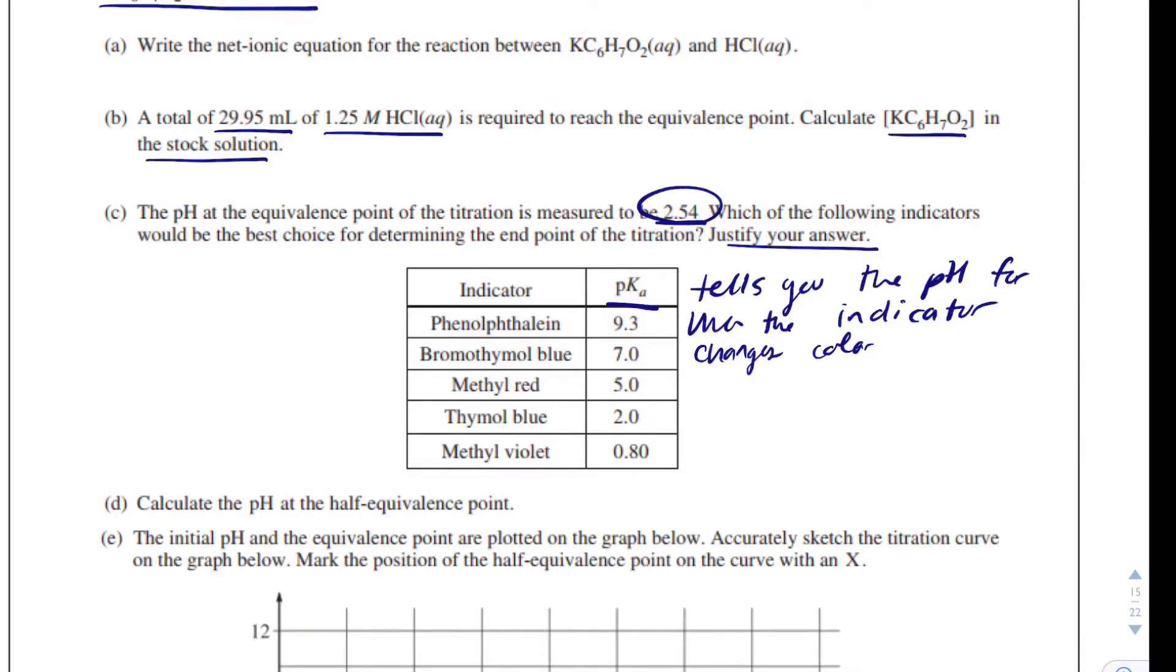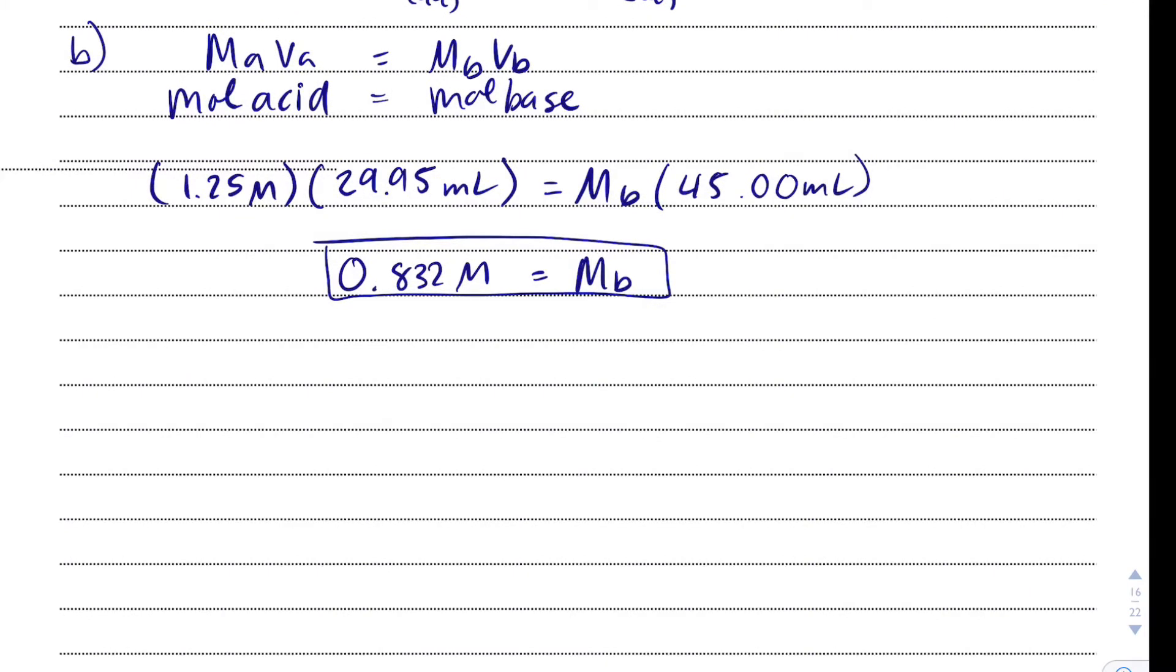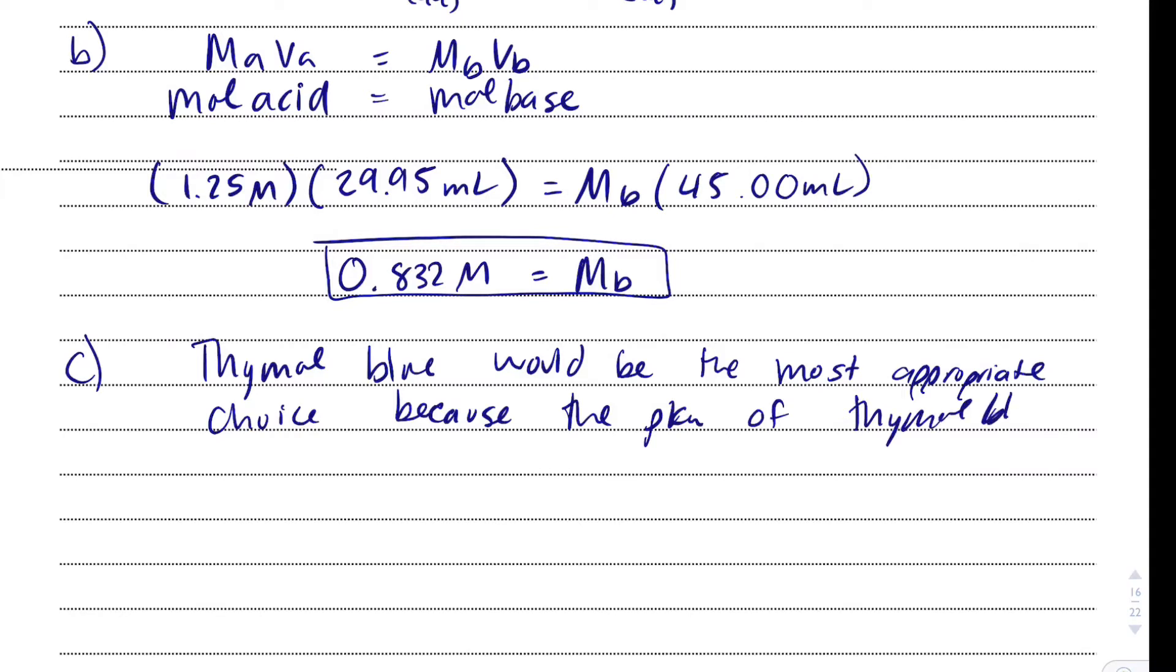So if the pH at the equivalence point is 2.54, we want an indicator that's going to change color around 2.54. So thymol blue is clearly the right choice here, but we've got to be able to justify it. So chances are on this one that you say thymol blue and that you don't get any points because you need to justify.